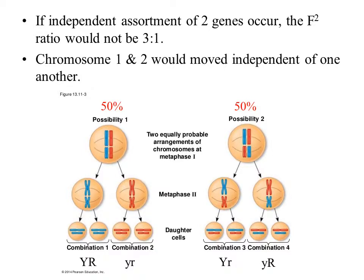If independent assortment of two genes occurs, the F2 ratio would not be a 3 to 1 ratio. Chromosome 1 and chromosome 2 would move independently of one another. So based on the image, 50% of the time you would get probability 1 and 50% of the time you could get probability 2 — meaning sometimes all of the blue chromosomes stay on the left side, and sometimes they don't.